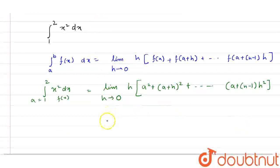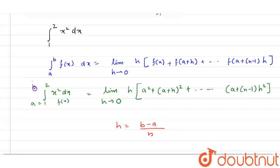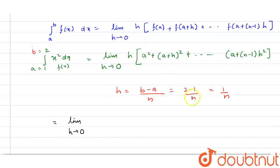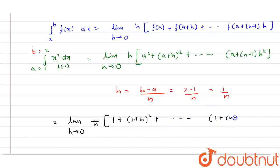We know that h equals (b−a)/n. Here b equals 2, so h equals (2−1)/n, which gives h equals 1/n. Now since a equals 1, substituting gives limit h tends to 0 of (1/n) times [1² + (1+h)² + ... + (1+(n-1)h)²].